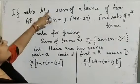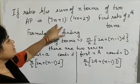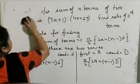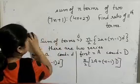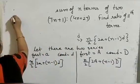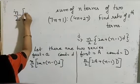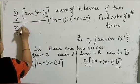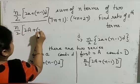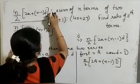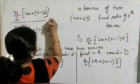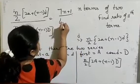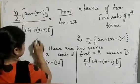It is given that the ratio of the sum of n terms of the two series is (7n + 1) : (4n + 27). So when we take out the ratio of the two series, we get [n/2 × (2a + (n−1)d)] / [n/2 × (2A + (n−1)D)] = (7n + 1) / (4n + 27), as given in the question.